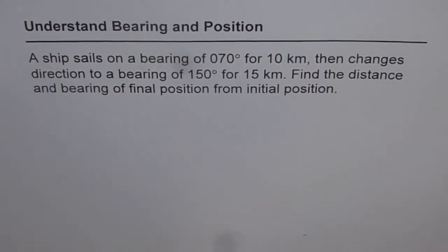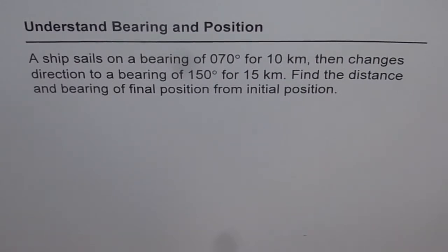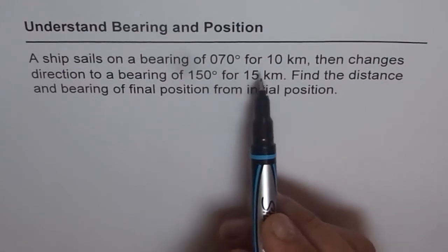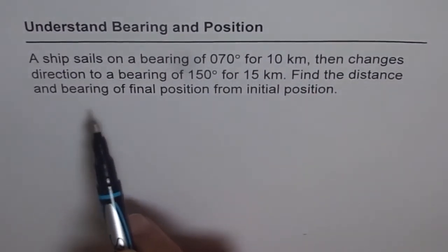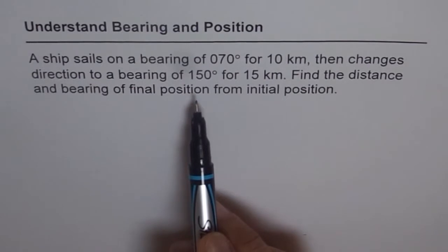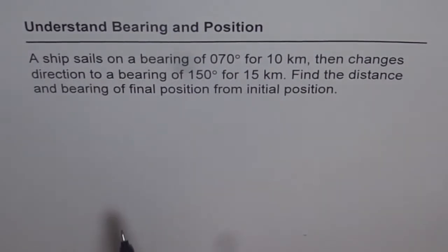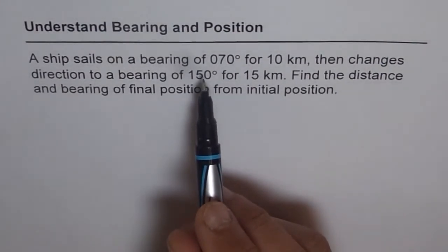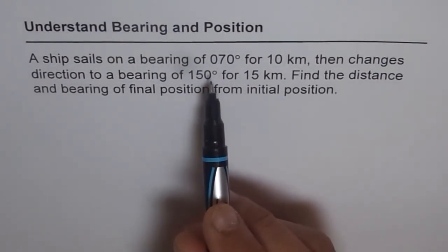We are about to take a few examples to solve three-dimensional problems using trigonometry. Now before that, let's understand bearing angle with the help of this example. A ship sails on a bearing of 070 degrees for 10 kilometers, then changes direction to a bearing of 150 degrees for 15 kilometers. Find the distance and bearing of the final position from initial position. Now what is bearing angle? It is an angle which is measured from north in clockwise direction.